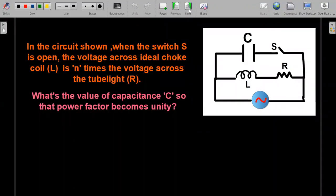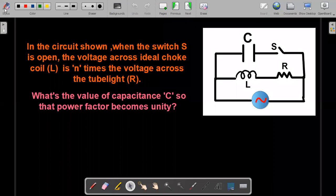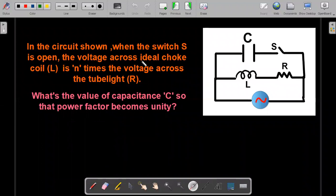So let me present to you the formal wording of the AC challenge first. This is a circuit that you could see on the right of your screen. There is a switch as you could observe, initially it is open. In the circuit shown, when the switch S is open, the voltage across the ideal choke coil, that is this inductor L, is n times the voltage across the tube light R. What is the value of capacitance C so that the power factor becomes unity when the switch S is closed?